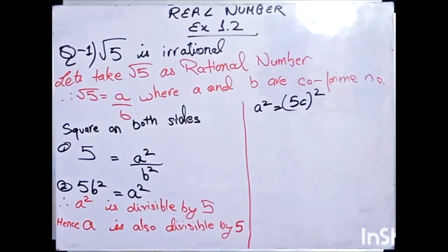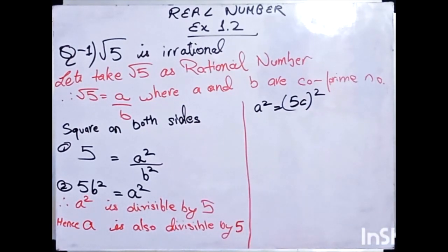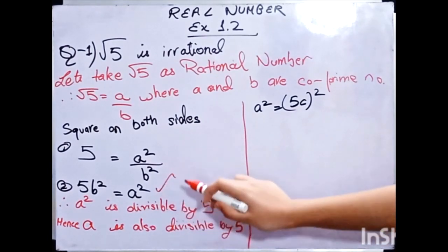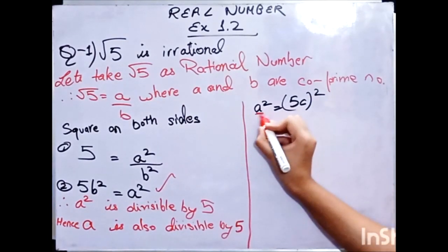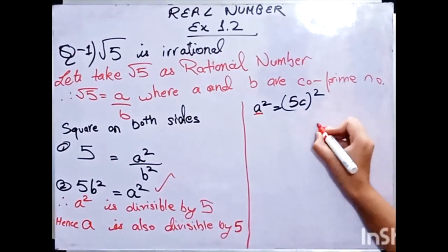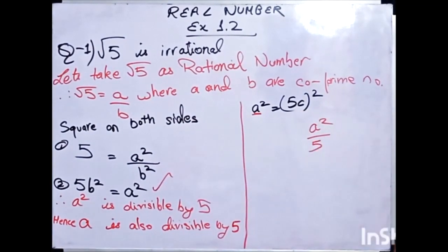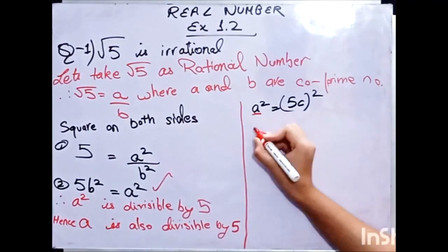Now, we know that A squared is equal to 5B squared. So I will replace A squared with 25C squared. That gives us 5B squared equals 25C squared. Dividing both sides by 5, we get B squared equals 5C squared.